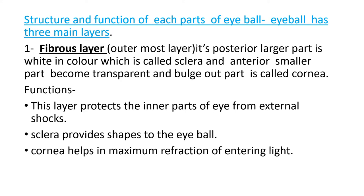Let us now study the structure and function of each part of the eyeball. The eyeball has three main layers. The first is the fibrous layer — the outermost layer. Its posterior, larger part is white in color, called the sclera, and the anterior, smaller part becomes transparent and bulges out — that part is called the cornea. The functions of the fibrous layer are: it protects the inner part of the eye from external shocks; sclera provides shape to the eyeball; and cornea helps in maximum refraction of entering light.